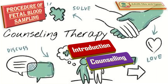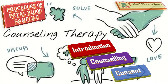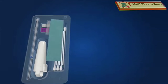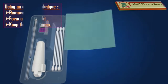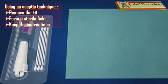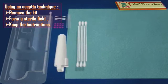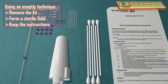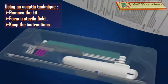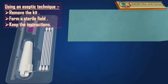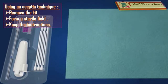Now let us talk about the procedure of fetal blood sampling. After introduction and appropriate counseling of the patient, take an informed consent and start the procedure by using an aseptic technique. Remove the kit from the sealed bag and unfold the outer drape to form a sterile field. Keep the instructions written on the kit by your side.